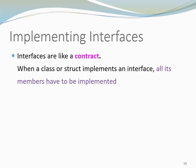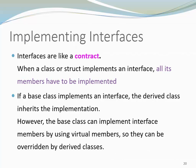Now let's have a look at implementing interfaces. Interfaces are like a contract — whenever a class or a struct implements an interface, all its members have to be implemented. If a base class implements an interface, the derived class inherits the implementation. However, the base class can implement interface members by using virtual members, so they can be overridden by derived classes.